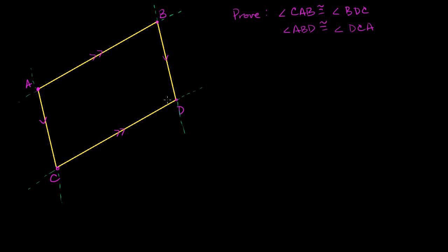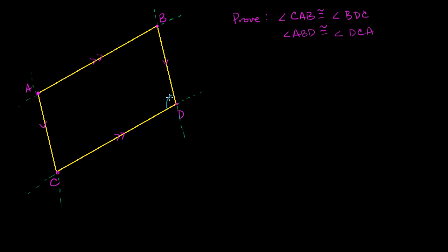Let's start with angle BDC. I'm going to mark this up here. Angle BDC right over here is an alternate interior angle with this angle right over there. We can extend this point and call it point E. So angle CDB is congruent to angle EBD by alternate interior angles. BD is a transversal, and these two lines — AB or AE — are parallel to CD.